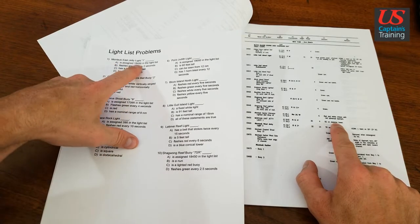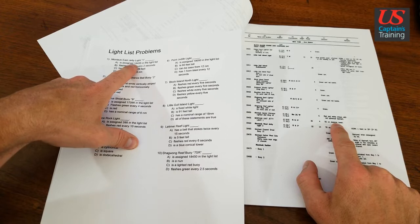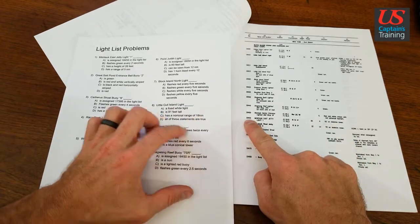For one, it says Montauk East Jetty Light One is assigned 18455 in the light list. That is true: 18455.